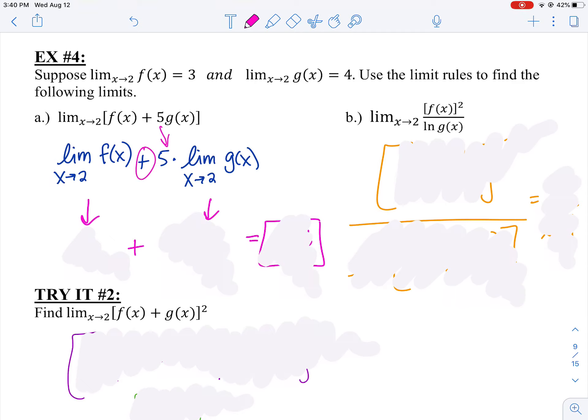Then I can add those two quantities together. So what is the limit as X approaches two of F(X)? Well, remember from up in the problem, it says that the limit as X approaches two of F(X) is three. So I can plug in a three there.